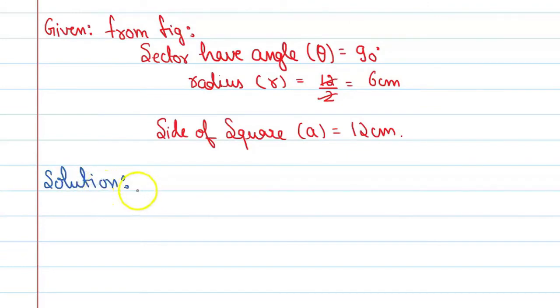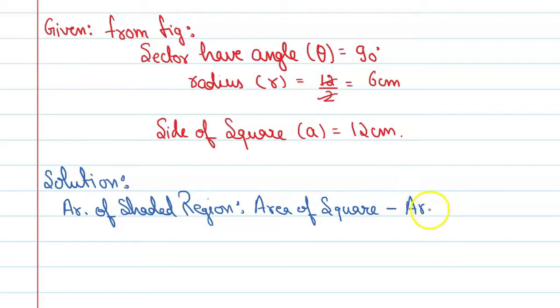See, first of all, we find area of shaded region is equal to, we can say, area of shaded region, it is equal to area of square minus, let me correct it, 4 into area of sector. This is the way.